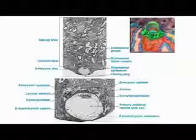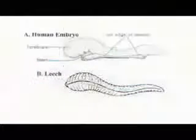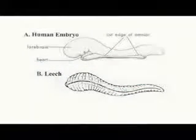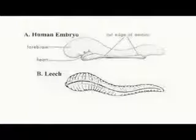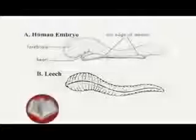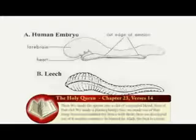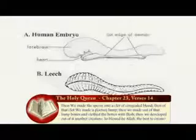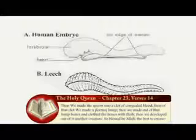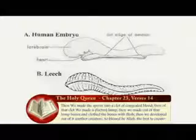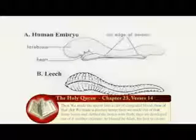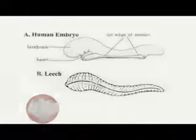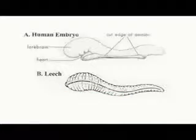Next is Alica. Alica is Surah Al-Uminum, Ayah 14: 'Then we created the drop into a leech-like structure. Then of that leech-like structure, we made a chewed-like substance.' Alica refers to a leech-like appearance, especially at about 22 days, as shown in this slide.